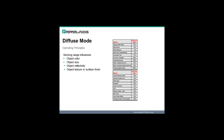Simply put, larger, lighter, or shinier objects reflect more light and therefore can be sensed at a greater distance. Conversely, darker, duller, and irregularly shaped objects generally absorb more light, therefore limiting the detection distance of the sensor.